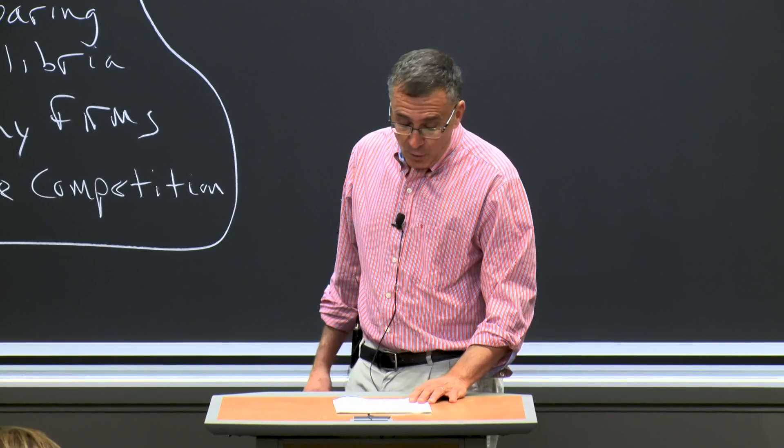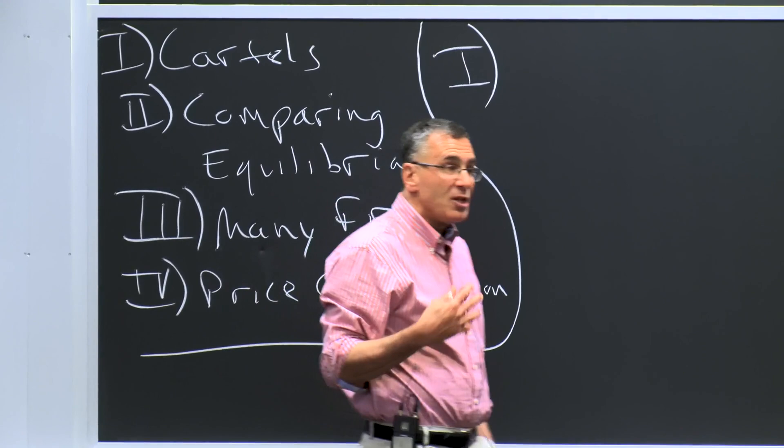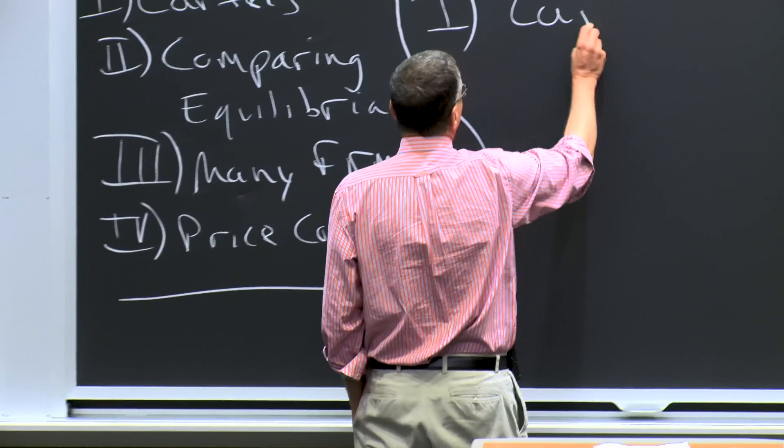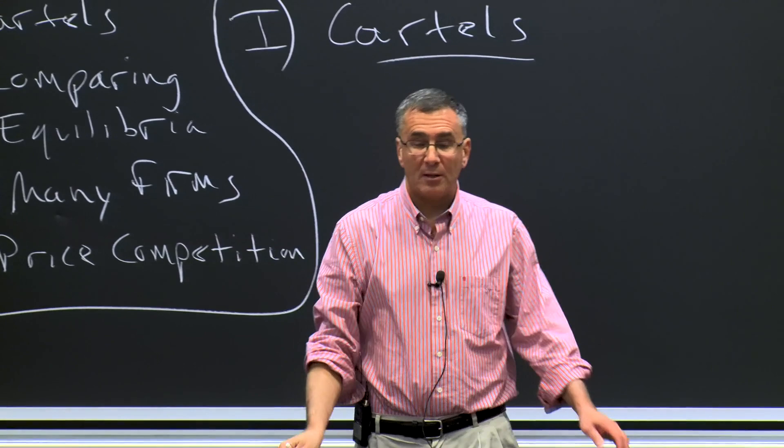I want to talk today about continuing our discussion of oligopoly. Last time, we talked about non-cooperative equilibria. But at the start, we said life would just be better off if everyone could just cooperate. Someone even asked, why don't they just cooperate? So let's talk about that — let's talk about cartels. What happens when firms try to cooperate and achieve the cooperative equilibrium in oligopolies?